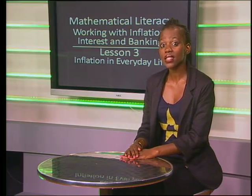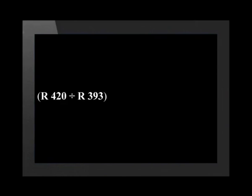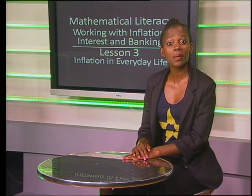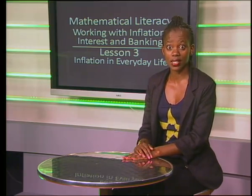Now that we know the difference in cost, we need to divide by the original price and multiply it by 100. This will give us a percentage. 420 rand divided by 393 rand multiplied by 100 equals approximately 107.69%. Remember that the 100% shows the original price and the 7.69% is the percentage of increase.